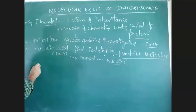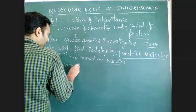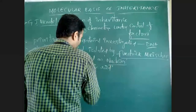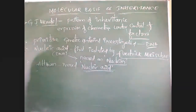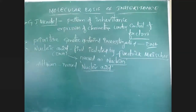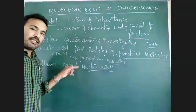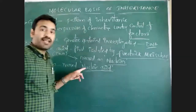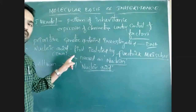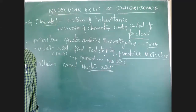Then Altman is a scientist who named it as nucleic acid. The name or term 'nucleic acid' was given by a scientist called Altman. Altman gave the term due to the presence of the acidic property — it is an acidic substance present in the nucleus, so it is called nucleic acid.